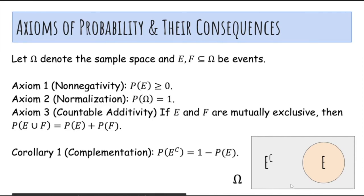And a corollary of this is that the probability of E complement, which is the probability that E does not happen, is just 1 minus the probability of E happening.